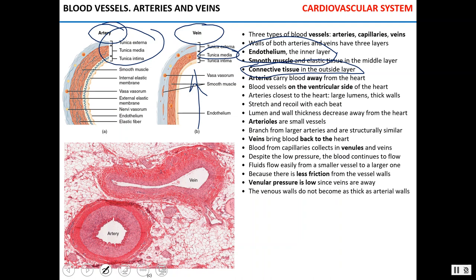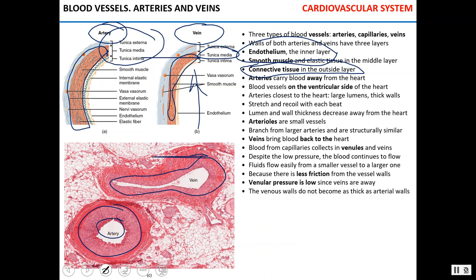In arteries, the tunica media — the smooth muscle — is much more pronounced and thicker, as you can see on the micrograph. In veins, it is not as prominent, so veins cannot maintain a perfect round shape. As a rule, arteries always carry blood away from the heart; they arise on the ventricular side. Arteries closer to the heart have large lumens and thick muscular walls — these are elastic arteries that stretch and recoil with each heartbeat. Moving farther from the heart, to muscular arteries and arterioles (the smallest arteries), lumen size and wall thickness decrease.